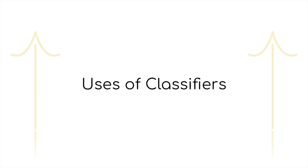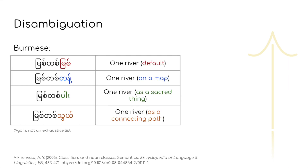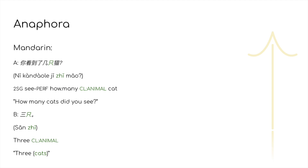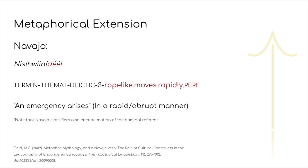Finally, it's time to go over the uses of classifiers. While they can seem semantically redundant, they have a variety of interesting functions. They can be incredibly useful tools for disambiguation — a single lexeme can encode a huge variety of meanings, with the exact intended meaning for that given context being shown through the classifier. In addition to this, they have extensive anaphoric use, so in contexts where it's obvious what you're referring to, you can leave out the noun and just use a bare classifier construction. As a final note, classifiers have some other fun uses through metaphorical extension, like how one rope-like verbal classifier is also used for general fast or abrupt movement in Navajo.